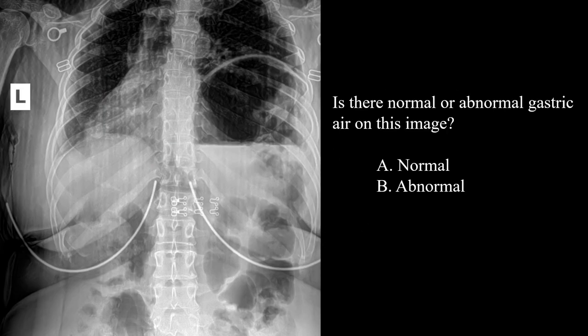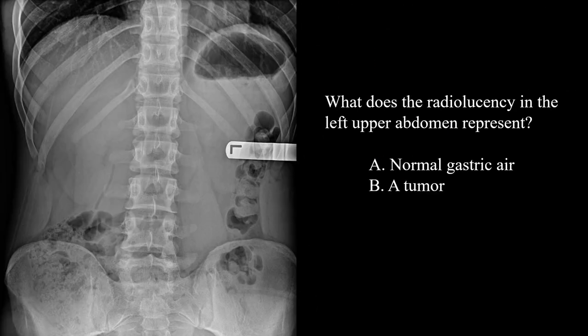Is there normal or abnormal gastric air on this image? This would be abnormal — the gastric air should be on the left side of the patient, but this air is on the right side, and this is not normal. And finally, what does the radiolucency in the left upper abdomen represent? And of course that would be normal gastric air.